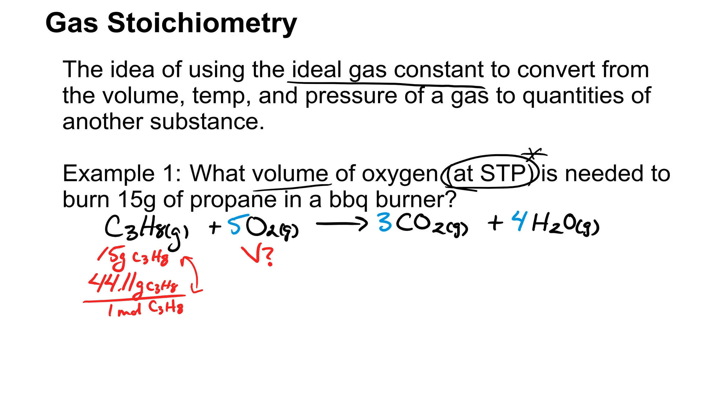If I want to go from moles of propane to moles of oxygen, I'm going to need the molar ratio. So the molar ratio in this case is always unknown over given. Our unknown is five moles of oxygen over one mole of C3H8. What this means is it takes five moles of oxygen to react with one mole of C3H8. That's how we exchange between moles of one and moles of the other.